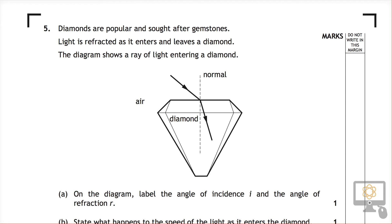Light is reflected—no, it's not reflected. Let's get this right. It's refracted as it enters and leaves the diamond. That means it changes speed and, as a consequence of that, it changes direction.